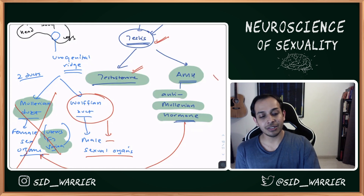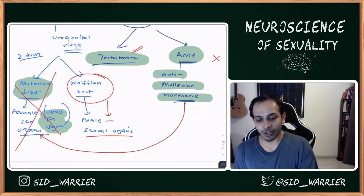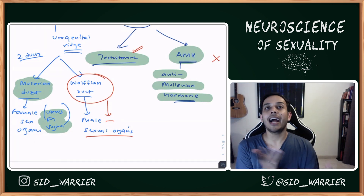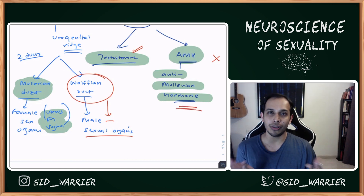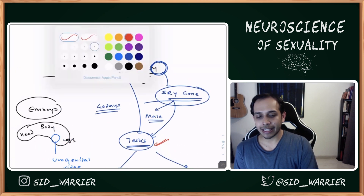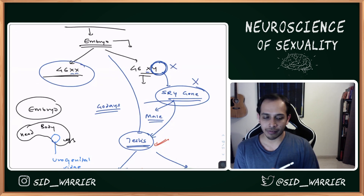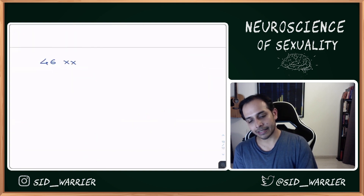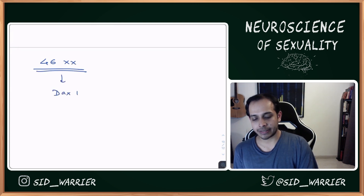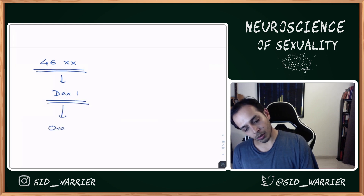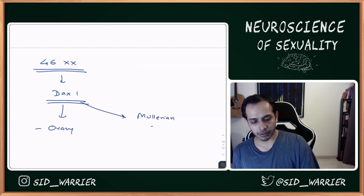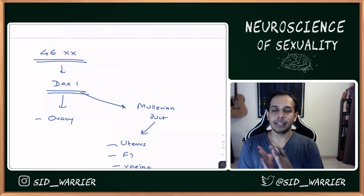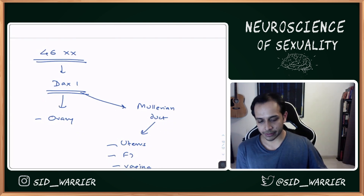If for some reason there is no AMH, the Müllerian duct will not go away, and you can end up with both male and female sexual organs — just because the Anti-Müllerian hormone isn't working properly. In a 46XX embryo, there is no Y chromosome and no SRY gene, so the embryo forms an ovary. There is a gene called DAX1 that acts on the Müllerian duct to form the uterus, fallopian tube, and vagina — ultimately producing the female of the species.